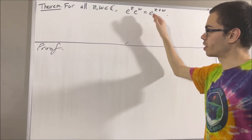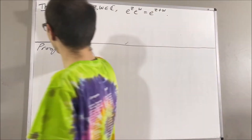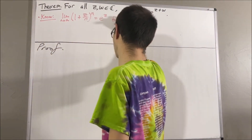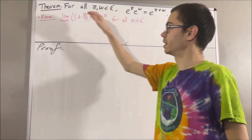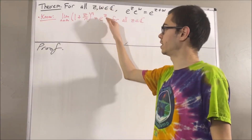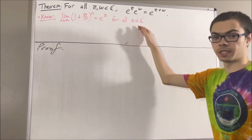Now let's remind ourselves what e to the z is. We know that the limit of this sequence is equal to e to the z for every complex number z.